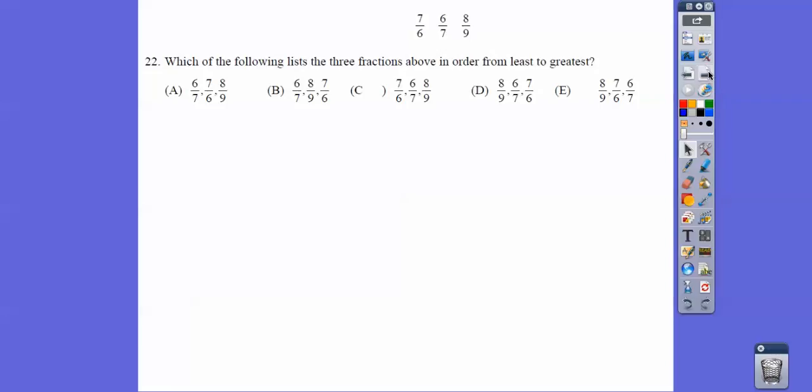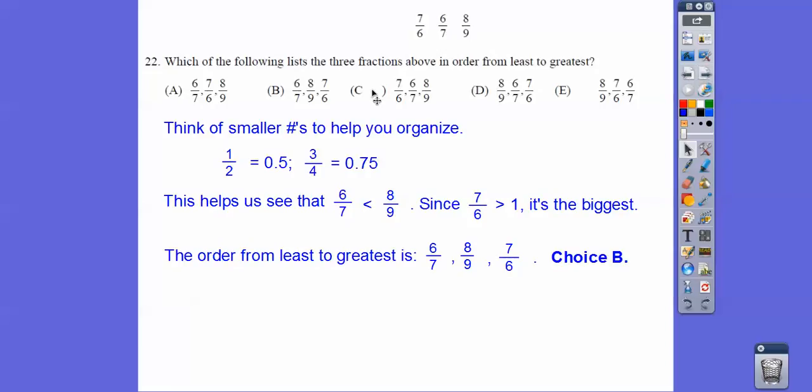All right, which of the following lists the three numbers in order from least to greatest? What I did, in case you don't know, well, this is an improper fraction, so this one's greater than 1. These two are less than 1. Think of smaller numbers, ones that we know of, where the numerator is 1 less than the denominator. Like 1 half. 1 half is 0.5. 3 fourths - you see how 3 is 1 less than 4? 3 fourths is 0.75. And 0.5 is less than 0.75.